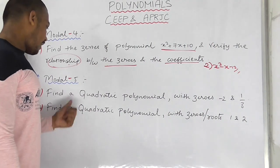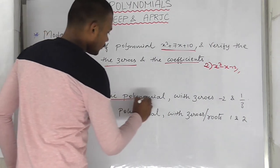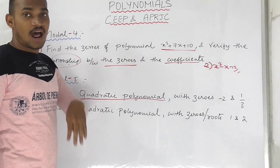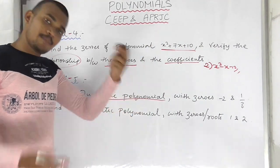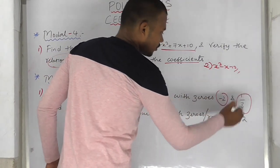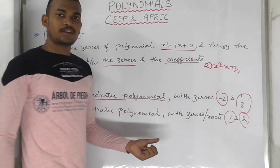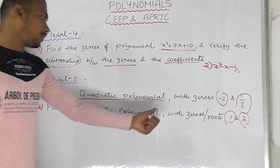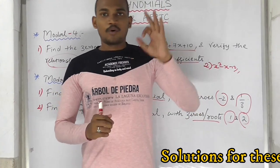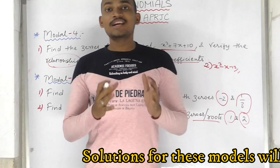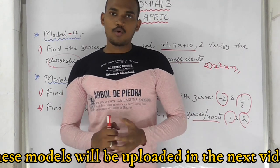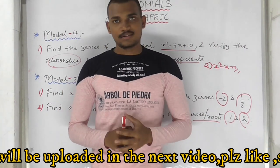Coming to model number 5: find a quadratic polynomial. Till now, the polynomial was given and we were asked to find the roots. But now, in model 5, we find — form a quadratic polynomial with given zeros or roots. This is the 5th model: quadratic polynomial formation.